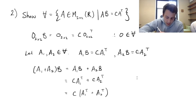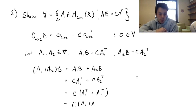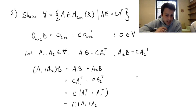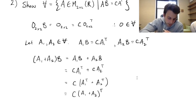From properties of the transpose of matrices, we can factor the transpose, and this is exactly what we tried to show — so A1 + A2 is clearly in V.